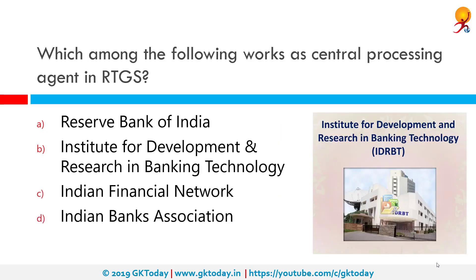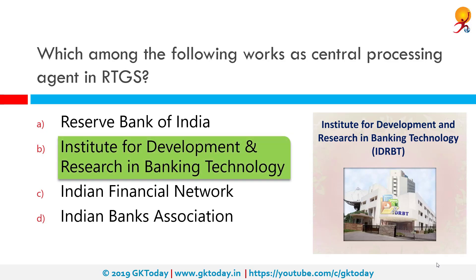Which among the following works as the central processing agent in RTGS? That would be the Institute for Development and Research in Banking Technology, or IDRBT. It is an institution exclusively focused on banking technology, established by the RBI in 1996, working at the intersection of banking and technology. It is located in Hyderabad.